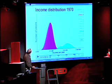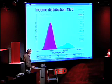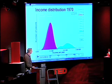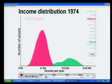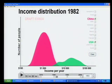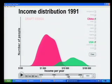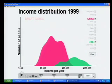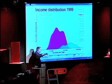We will be able to look at income distributions in completely new ways. This is the income distribution of China in 1970. This is the income distribution of the United States in 1970. Almost no overlap. What has happened is this: China is growing, it's not so equal any longer, and it's appearing here, overlooking the United States — almost like a ghost, isn't it? It's pretty scary.